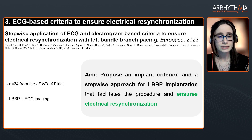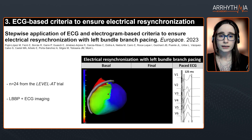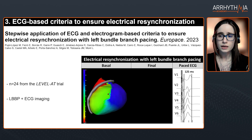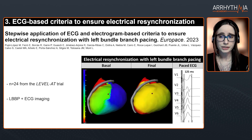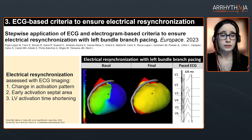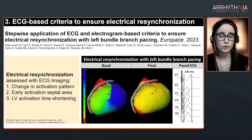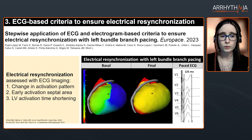We analyzed all the ECGI maps. In a map with late activation of the lateral wall of the left ventricle, we obtained the map with left bundle branch pacing and analyzed it. We considered that we were resynchronizing when we had three criteria: a changing activation pattern, early activation of the septal area, and a short left ventricular activation time.